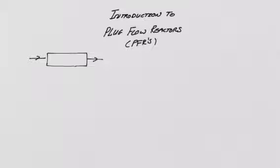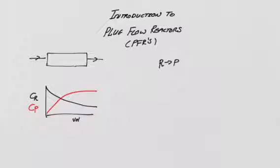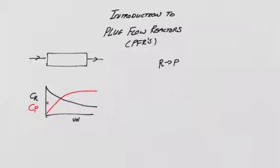If we think of what that means in terms of concentrations in the reactor, suppose we have a reaction where reactant goes to product — R goes to P. If we measured the concentration of reactant R, shown by the black curve, we would see it starts off high in the feed and then gradually drops as the material flows through the reactor. The product concentration starts off low at the entrance and increases, being highest at the exit.